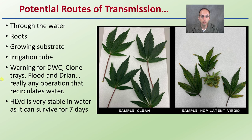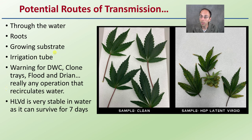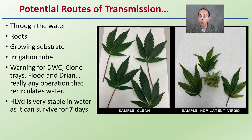Flood and drain systems, DWCs (deep water cultures), clone trays — really any operation that recirculates water is of concern. It can also reside in the irrigation tubes, the growing substrate, as well as the roots — all areas of potential transmission. This is why it can spread so quickly through an area. It's a very stable viroid and can survive in water for up to seven days, which can help speed infection of many plants in a growing operation.